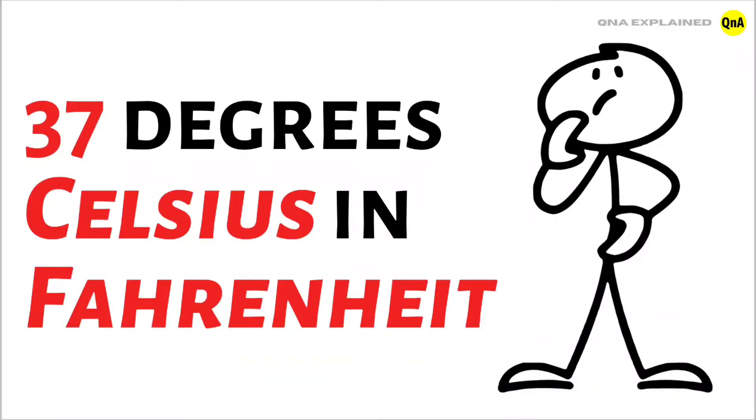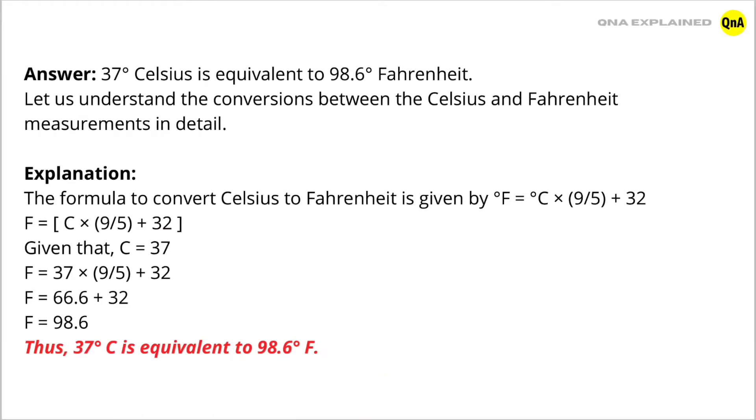37 degrees Celsius in Fahrenheit. Answer: 37 degrees Celsius is equivalent to 98.6 degrees Fahrenheit.